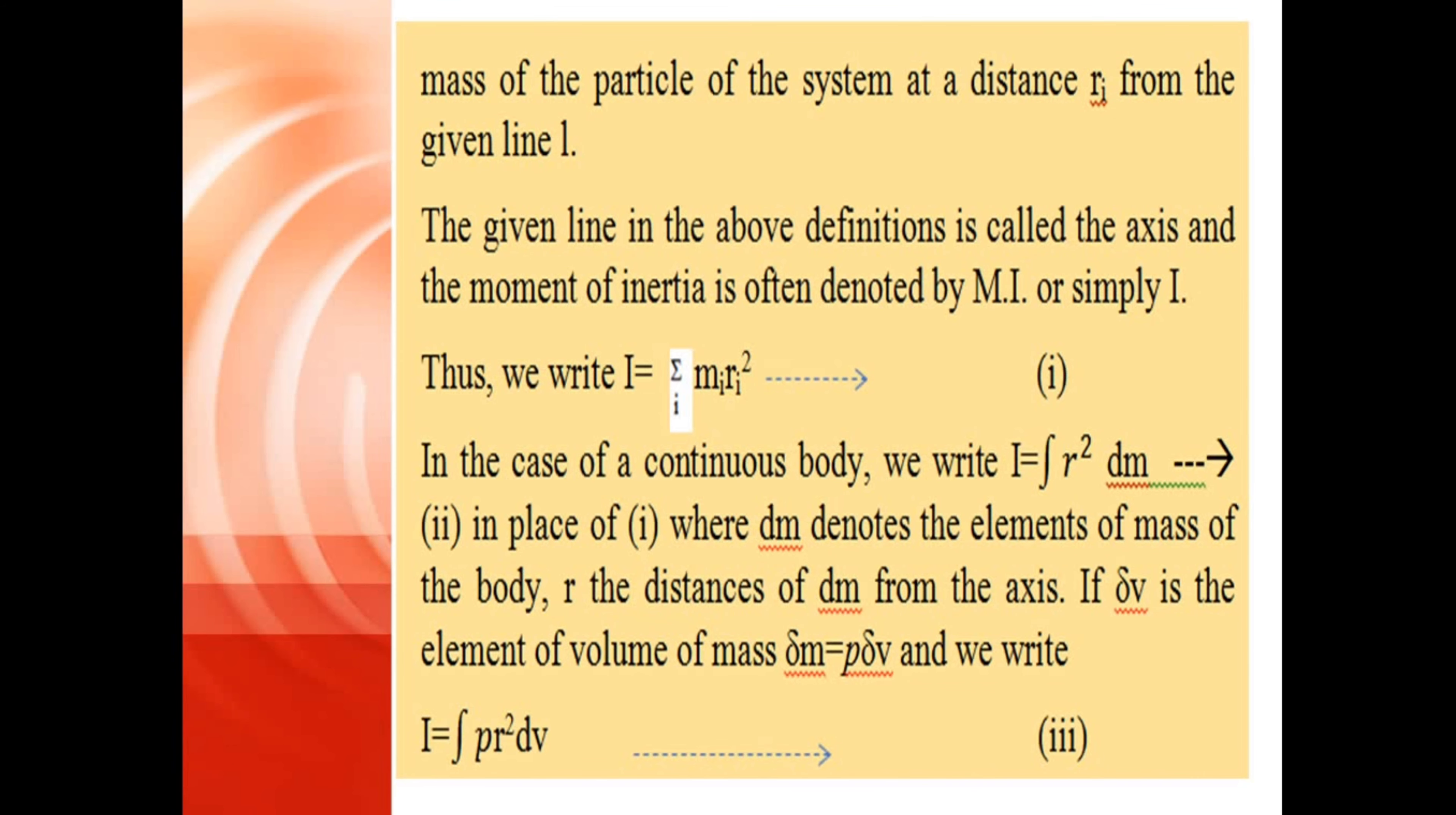In the case of a continuous body, we write I = ∫r²dm, equation (ii), in place of (i), where dm denotes the elements of mass of the body, r the distance of dm from the axis. If δV is the element of volume of mass δm = ρδV, and we write I = ∫ρr²dV, equation (iii).